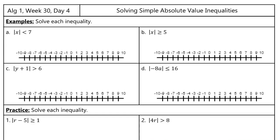Now we're going to look at absolute value inequalities. The difference between equations and inequalities is still pretty much the same: for equations we're getting a specific answer — in this case two answers — but with inequalities we're saying that there's a range of answers. How does that work with absolute value? It's going to work pretty similarly to what we just had, but let's explore it on A and B, and then I'll let you know the steps so you know exactly what to do.